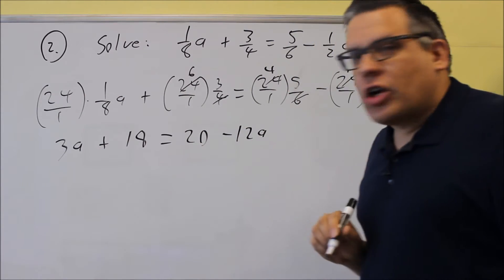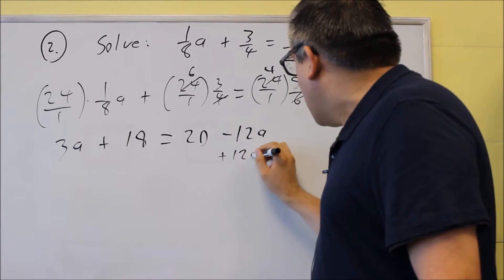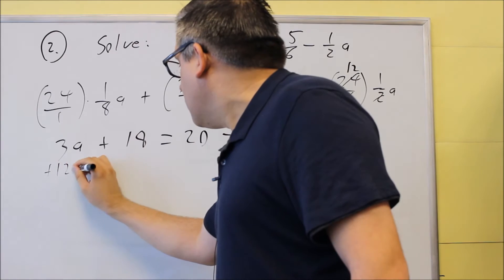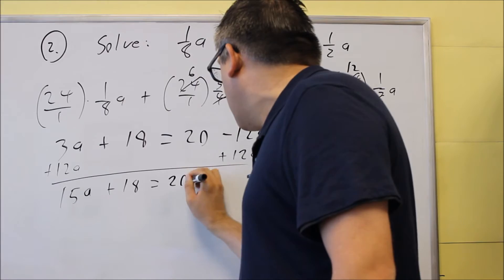Now we're just going to get all the variables on one side of the equation, I'm going to get all the a's on the left-hand side, so for this I'm going to add twelve a to both sides, and I get fifteen a plus eighteen equals twenty.